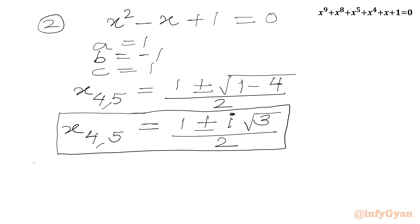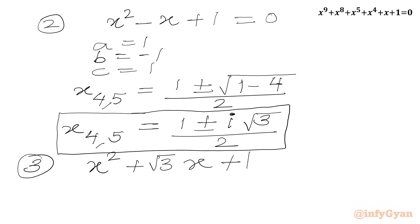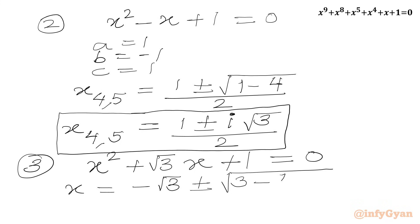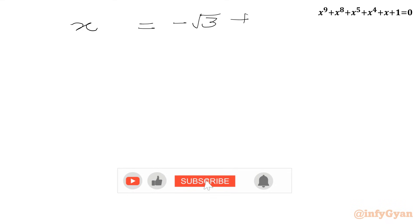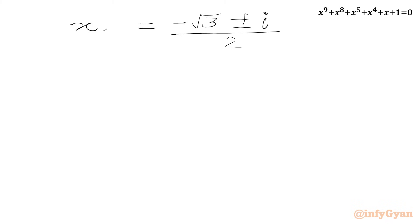Now we solve equation number 3: x squared plus root 3 x plus 1 equal to 0. Applying the quadratic formula with b equal to root 3, we get x equals minus root 3 plus or minus square root of (3 minus 4) over 2, which gives minus root 3 plus or minus i over 2. Again we are getting complex solutions for x₆ and x₇.